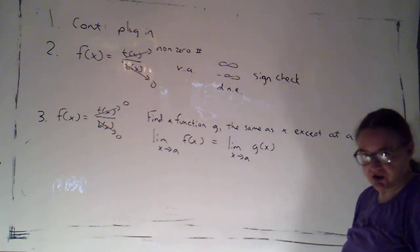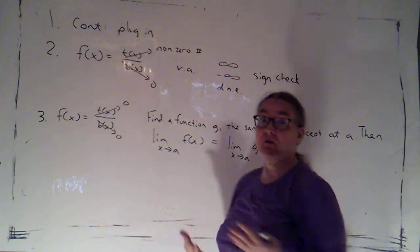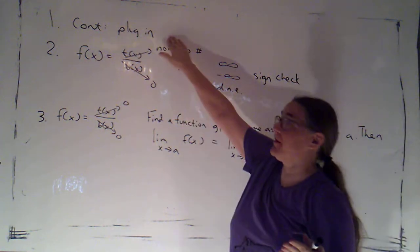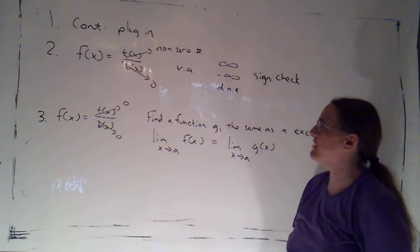If I have a fraction, there are a couple of possibilities. Generally speaking, for some fractions, if they're continuous I can plug in. But if I can't, it's going to be because the bottom is going to 0 most often.